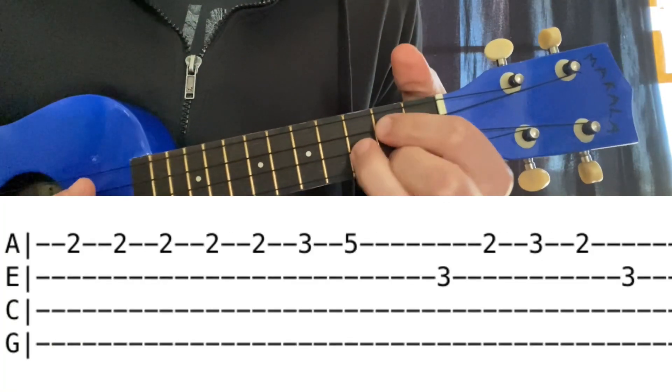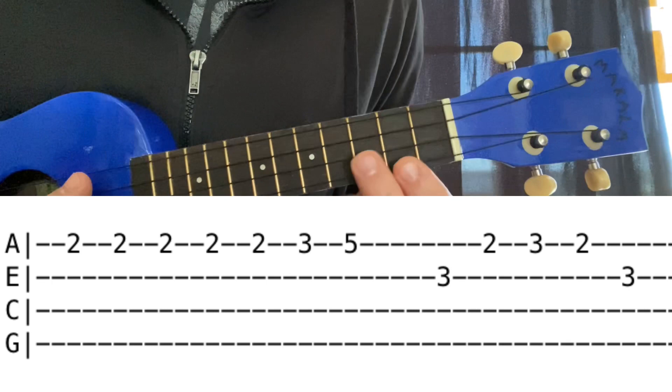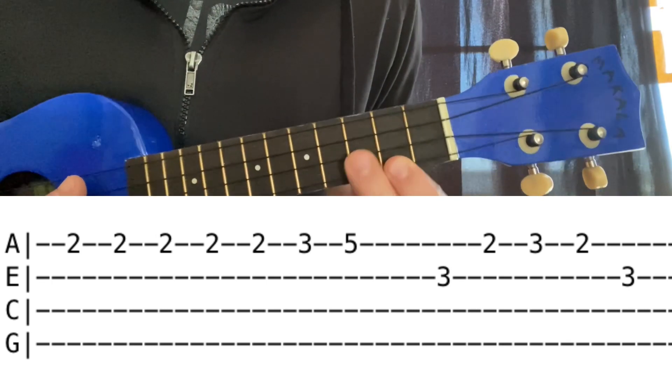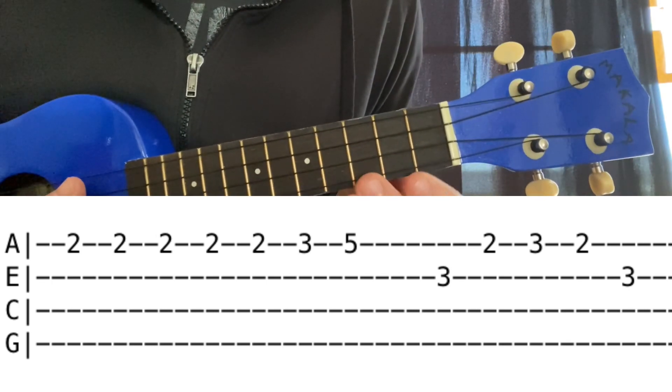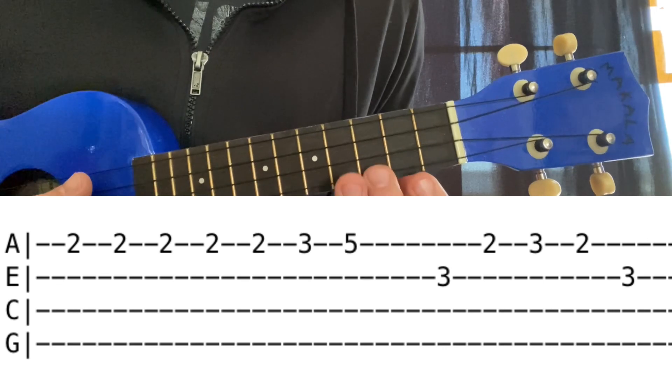For the main riff, if you're familiar with a G chord, it's basically the top half of that G chord, and we just play around with the third and the fifth fret of the first string.